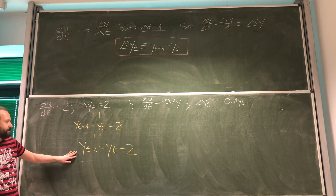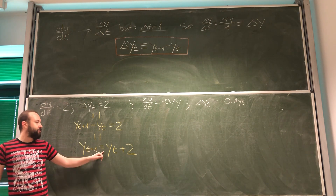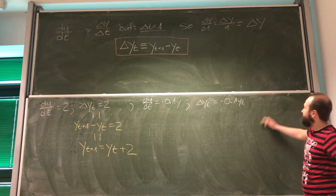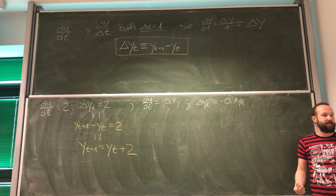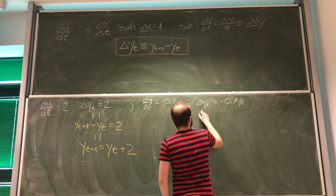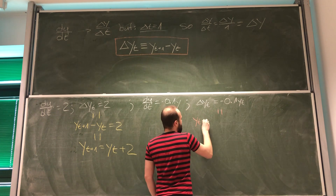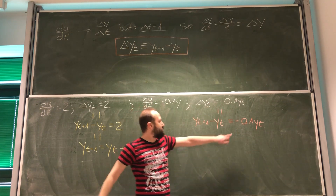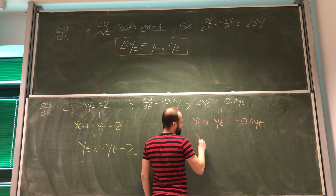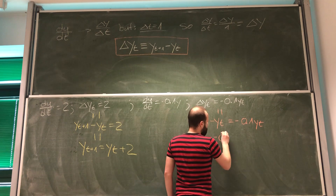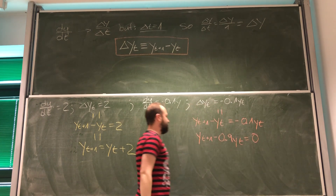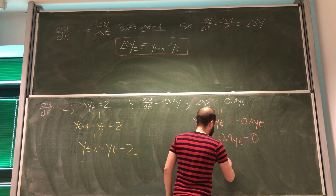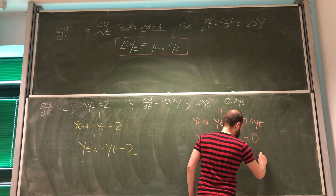Similarly, dy/dt = -0.1y can be rewritten as the difference equation Δyt = -0.1yt, or yt+1 minus yt = -0.1yt. Moving the yt term gives y(t+1) = 0.9yt. Both equations are linear — we do not see yt squared or yt multiplied by y(t+1). Both are first order difference equations since only two consecutive periods appear.